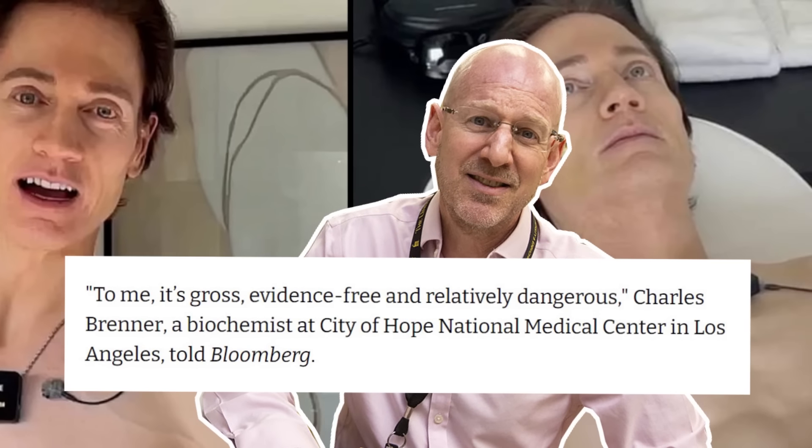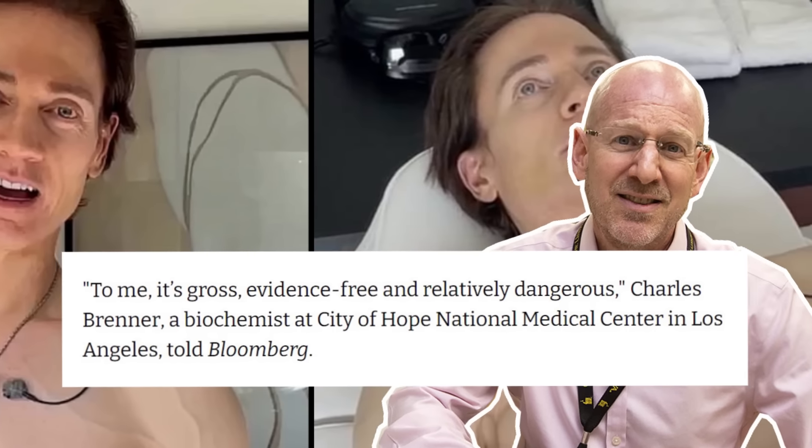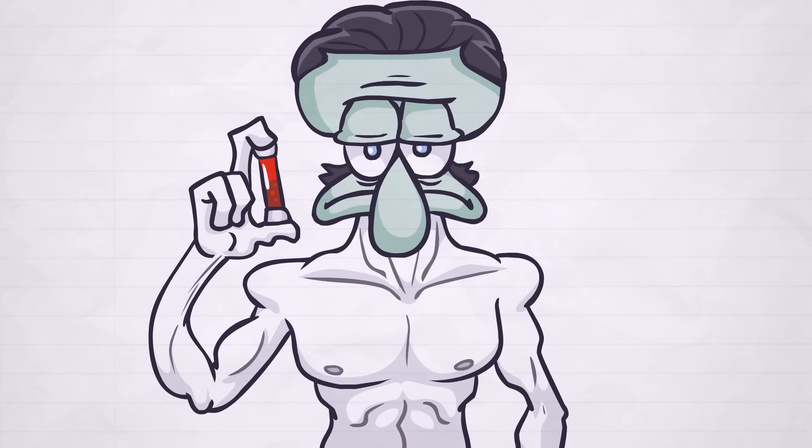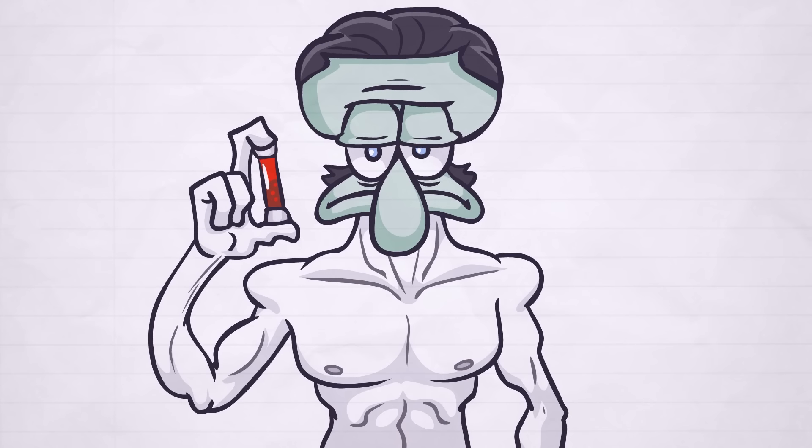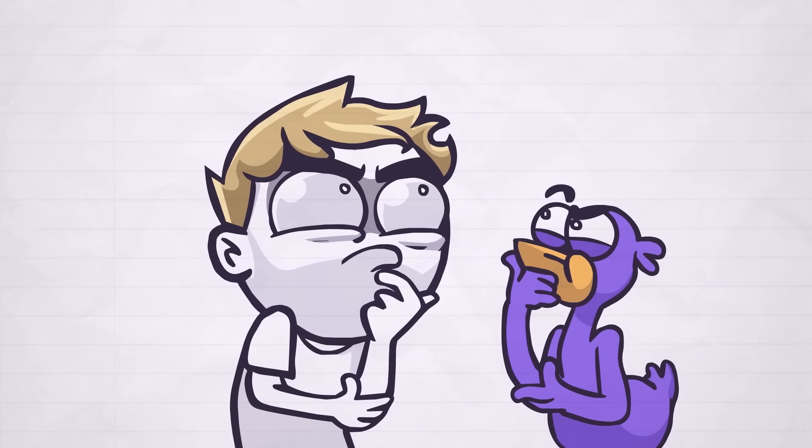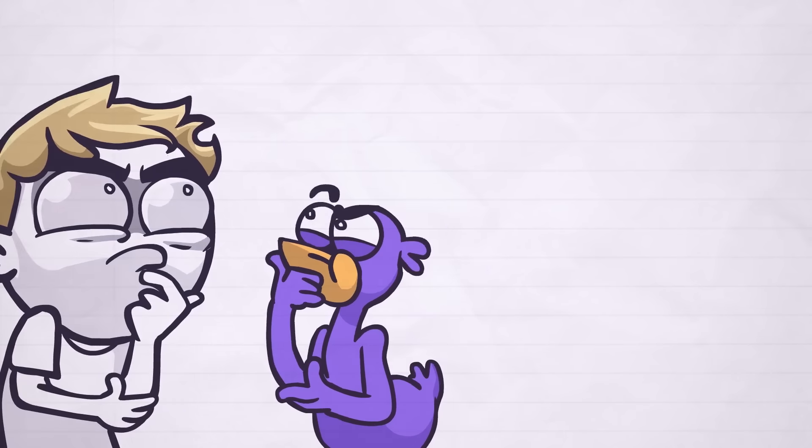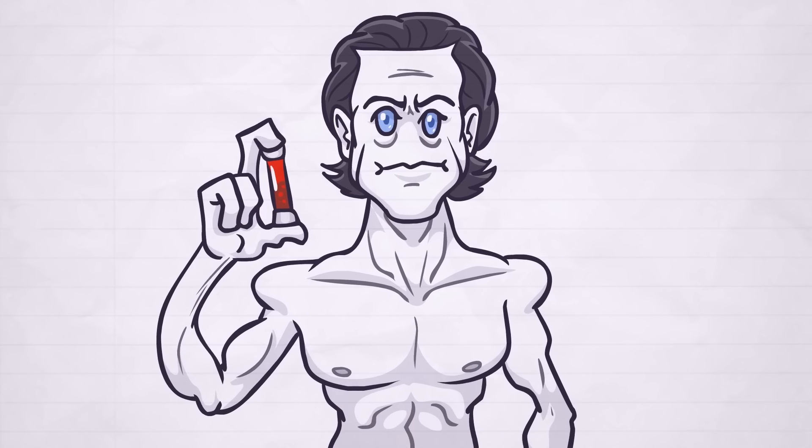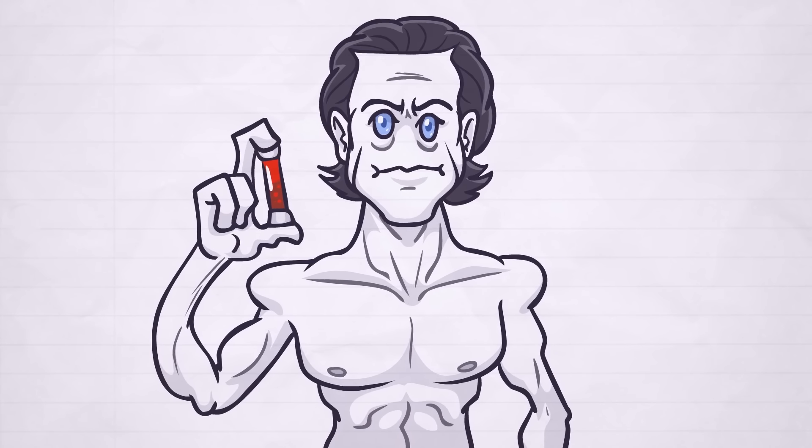Johnson believes that the rejuvenating properties in youthful blood can reverse his aging process, while biochemist Charles Brenner says, and I quote, To me, it's gross, evidence-free and relatively dangerous. Someone on Twitter also roasted Johnson by saying, all of that just to look like Squidward. It does make you wonder though, would you use your kid's blood to stay forever young? Because this guy has apparently discovered the fountain of youth, or so he seems to believe.